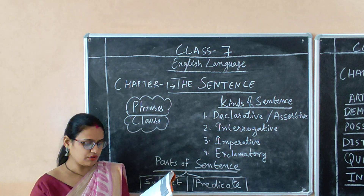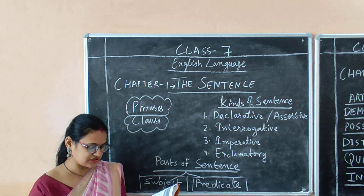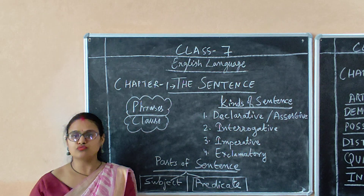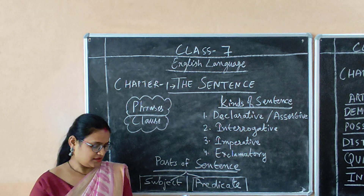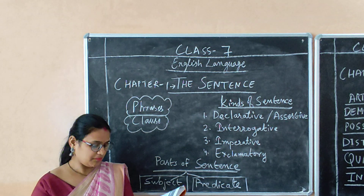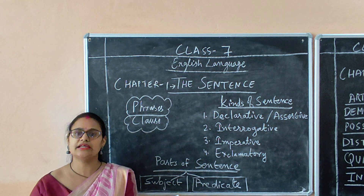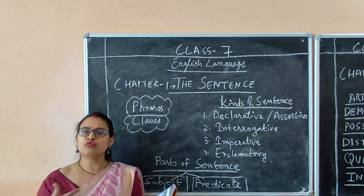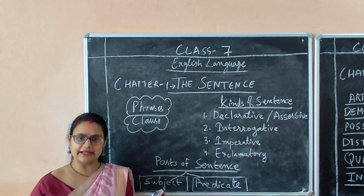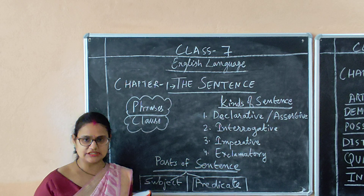Another example: 'We cannot start while it is raining.' So, 'we cannot start' — what we cannot start? It might be playing, might be studying — something would be there. But when you have completed the sentence with 'while it is raining,' then you understand that you are not able to start because somewhere it is raining. Hope you have understood the meaning of phrases and clauses well.